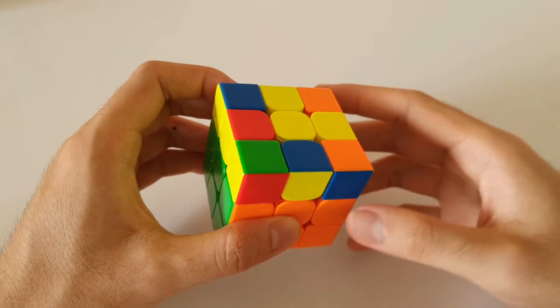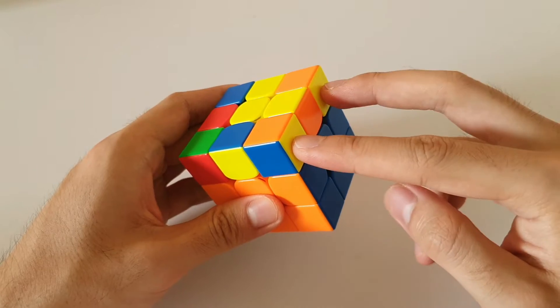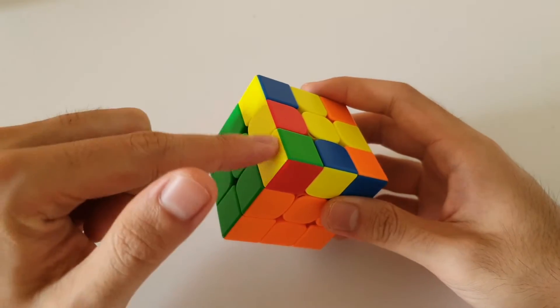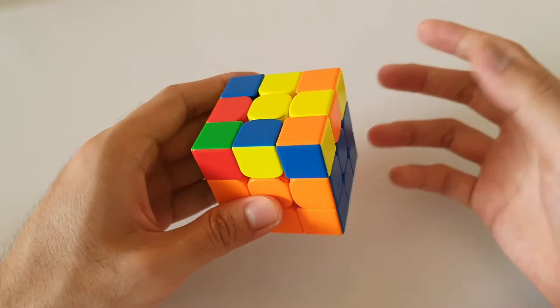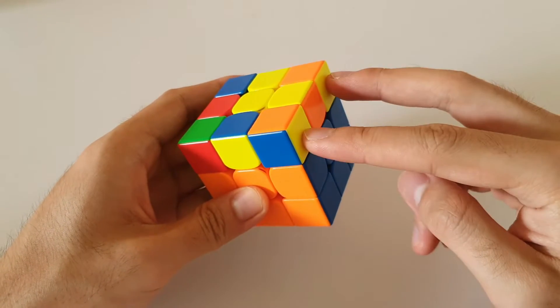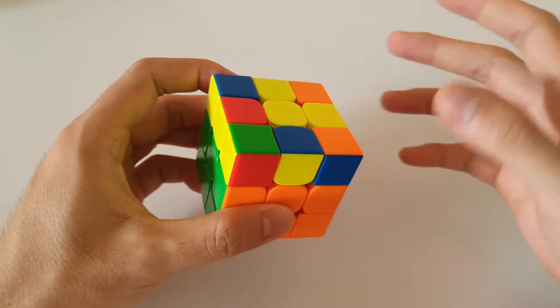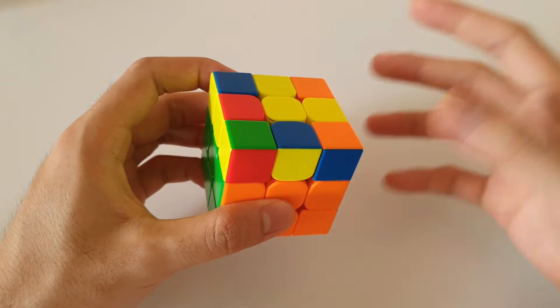Next case on the list is this one here. So once again, headlights. But this time, we have a 3x1 bar instead of a 2x1 bar. The way I like to recognize this case is the headlights are on the right side, which means that this would be the right-handed algorithm.